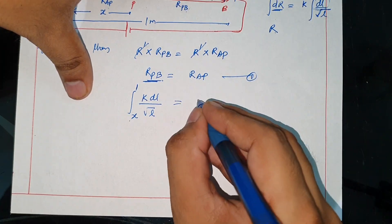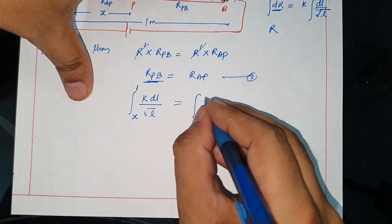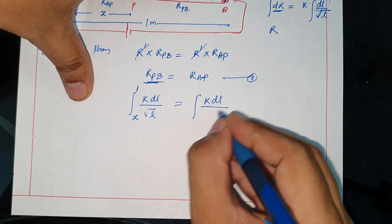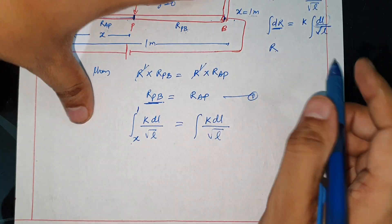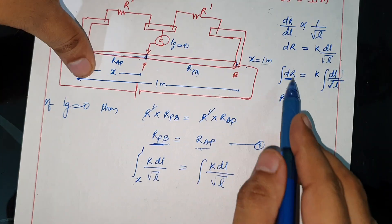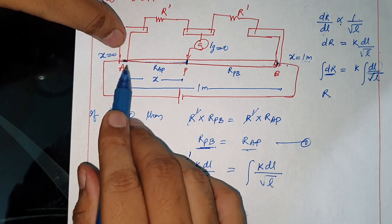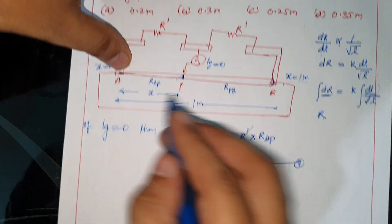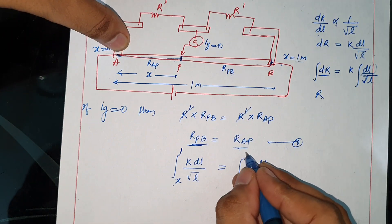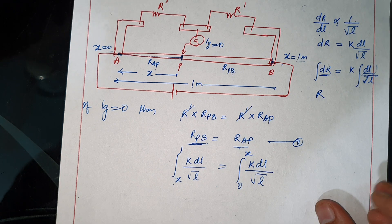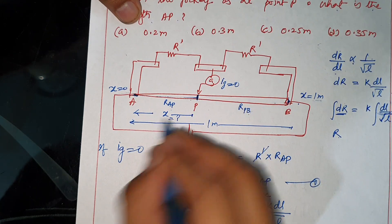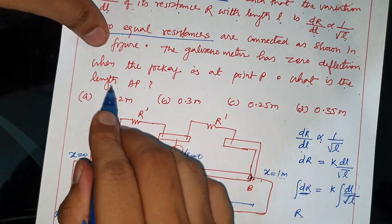For resistance RAP, we write K integral dL over root L. So RAP equals K integral of dL over root L from A to P. We need to put limits. This resistance will come from A to P, so limit is zero to X, where X is the distance we need to find. What is the length of AP?